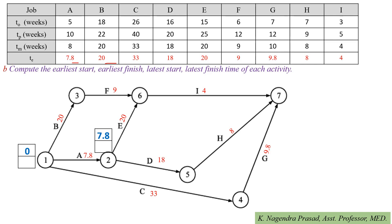For activity B, start time = 0 and finish time = 0 + 20 = 20. For activity C, earliest start time = 0 and finish time = 0 + 33 = 33. For activity D, start time = 7.8 and finish time = 7.8 + 18 = 25.8.